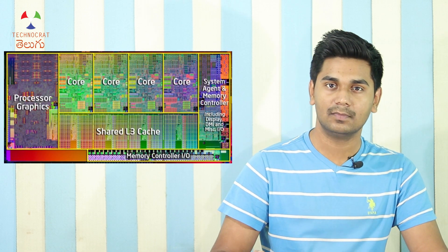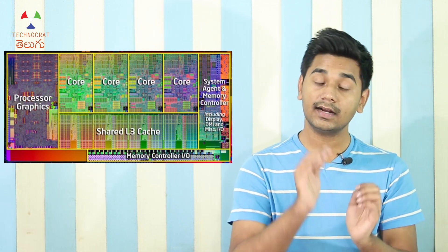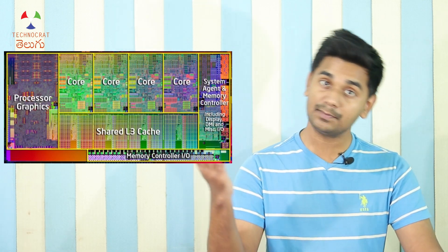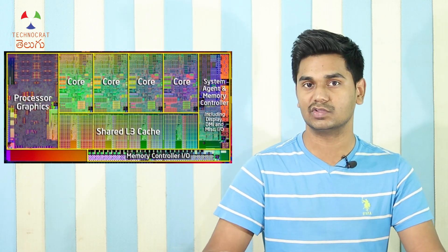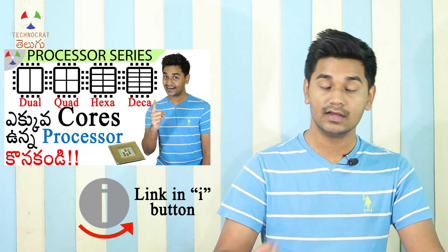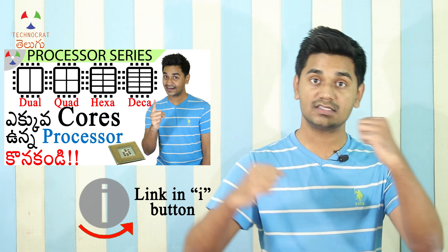Now let's talk about cores. A core is an individual processing unit inside the processor. More cores mean more tasks can be completed in parallel. Think of it like having one person do a task versus two people doing it together — two cores can handle tasks in parallel, completing them faster.